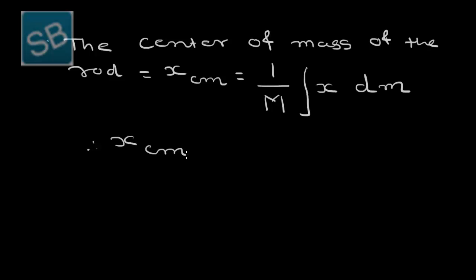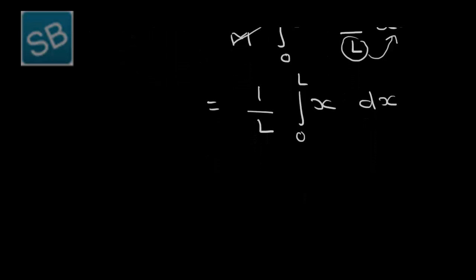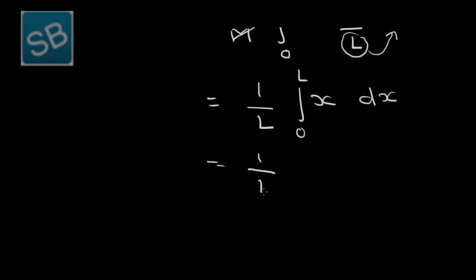xcm equals 1 upon M integration 0 to L, x dot—what is the value of dm? We have earlier obtained M by L into dx. If you see, this M and M are cancelled out. This L is constant with respect to x, so I can put it outside of the integration. So 1 over L, integral 0 to L, x dx. Now the integration of x dx is x square by 2.